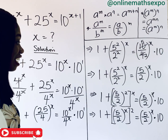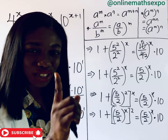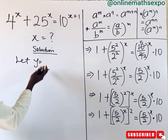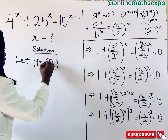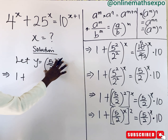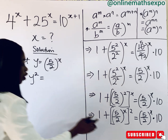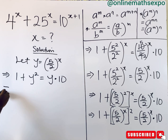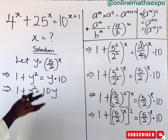You will notice that you are having 5 over 2 to the power of x here and also here. So at this point, you are going to do a substitution. Let y equal 5 over 2 raised to the power of x. You can choose any variable. Each time I see this expression, I will replace it with y. So this is going to give us 1 plus y — this will now take the shape of y, raised to the power of 2 — is equal to y multiplied by 10.